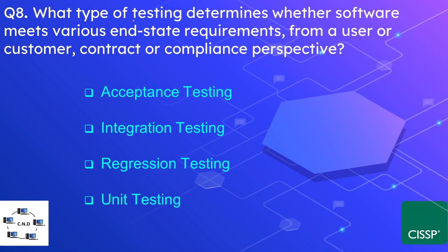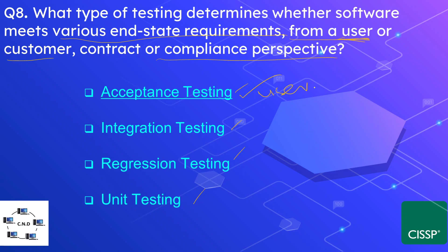Question number 8: What type of testing determines whether software meets various end-state requirements from a user or customer, contract, or compliance perspective? The options are acceptance testing, regression testing, or unit testing. The correct option is acceptance testing — when the user or customer is involved, this is called user acceptance testing.